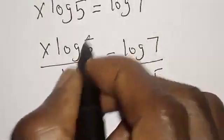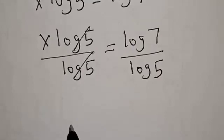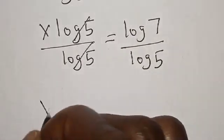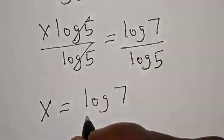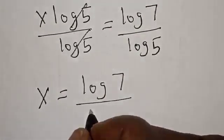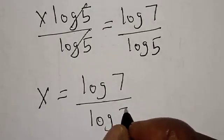Now, this one will cancel this. We have x is equal to log 7 over log 5.